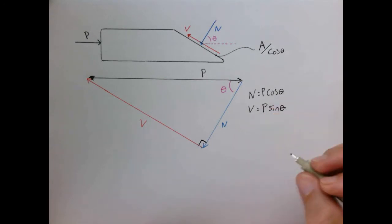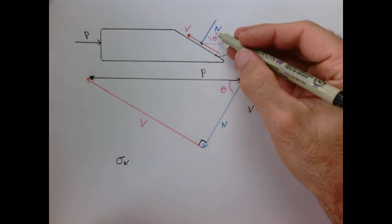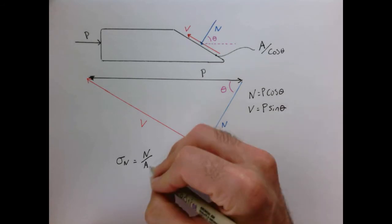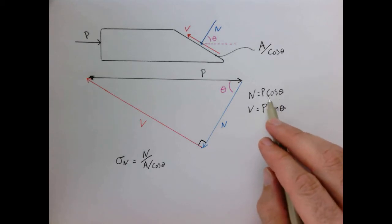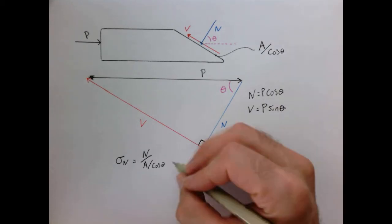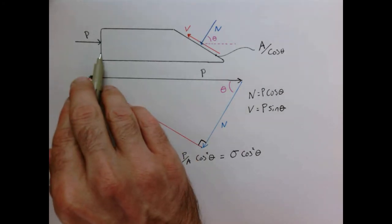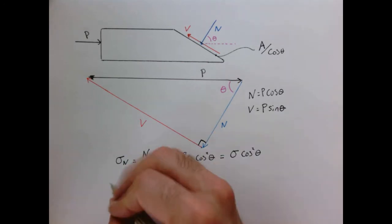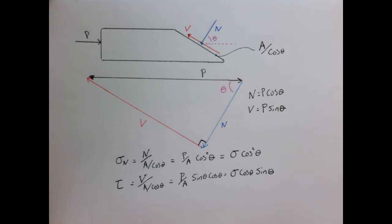So now let's get the stresses. Our normal stress acting on this surface is going to be our normal force divided by the area divided by the cosine of theta. If we put in our normal force of P cosine theta, then we get the nominal stress in compression of the column itself times the cosine squared of theta. And likewise for the shear stress.